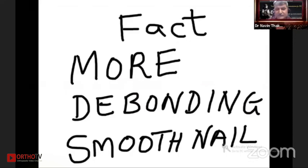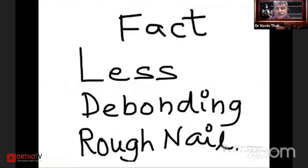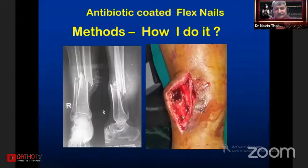The problem of the smooth nail is the slippage of cement — there is more debonding with a smooth nail, so less debonding with a rough nail. That was the idea behind the criss-cross surface modification.